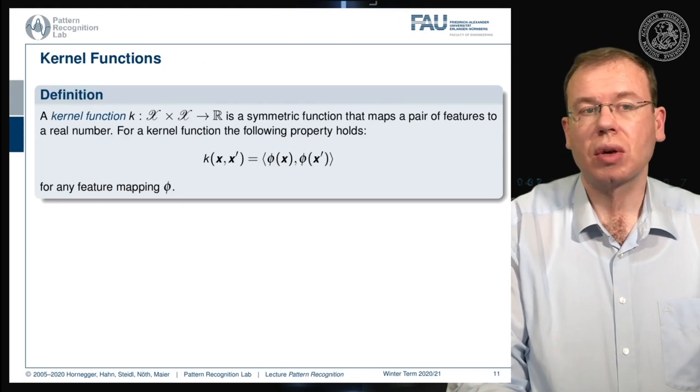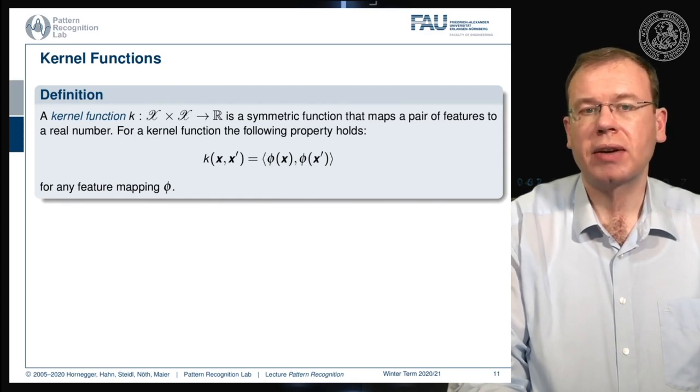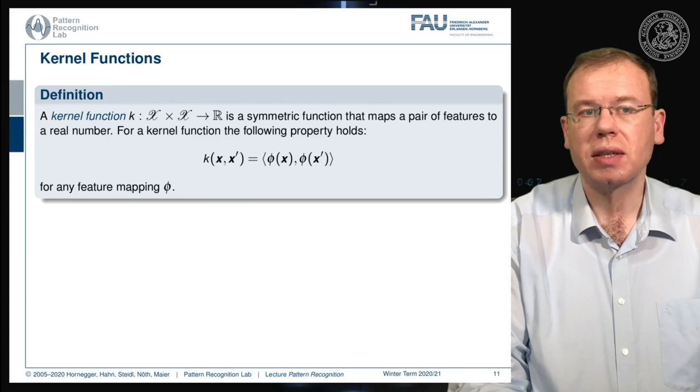This then brings us to the notion of a kernel function. A kernel function is mapping from two feature domains that are both identical of course x to some value r, a real value, and it needs to be a symmetric function that maps pairs of features to real numbers. In this case then the property holds that our k is given as the inner product of the feature transforms of the respective x and x prime for any mapping phi.